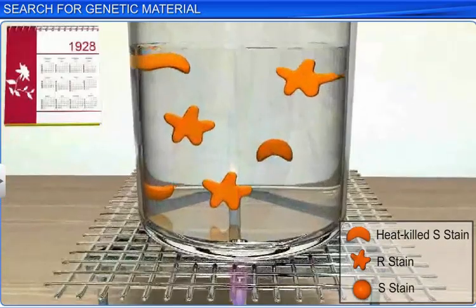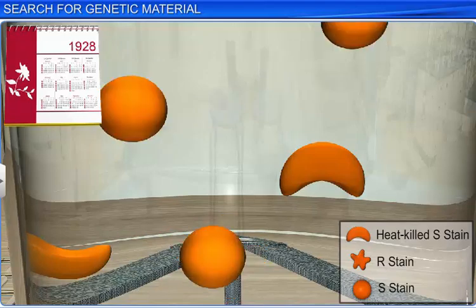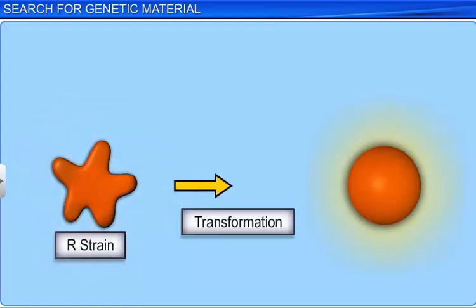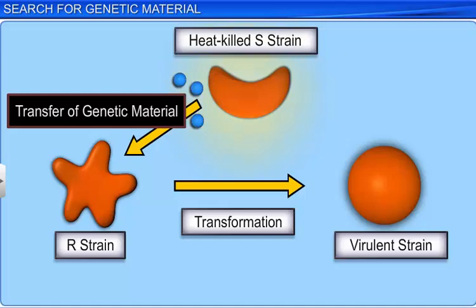So, on the basis of this experiment, Frederick concluded that the heat-killed S strain bacteria had somehow transformed the R strain bacteria. He also concluded that the reason why the R strain bacteria produced a smooth polysaccharide coat and became lethal or virulent was because of the transfer of some genetic material from the heat-killed S strain bacteria. However, there was still no means to ascertain or identify the genetic material that was transferred and responsible for the transformation process.